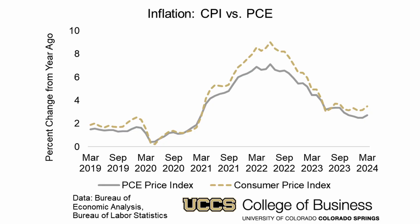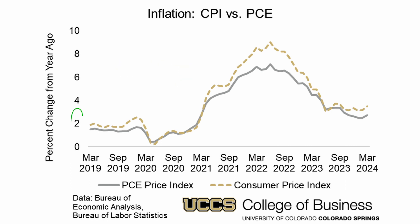Inflation trends generally look similar using either measure, but on average, CPI inflation is about 0.4 percentage points higher than PCE inflation. Since the Fed's goal is 2% PCE inflation, that would mean having CPI inflation around 2.4%.